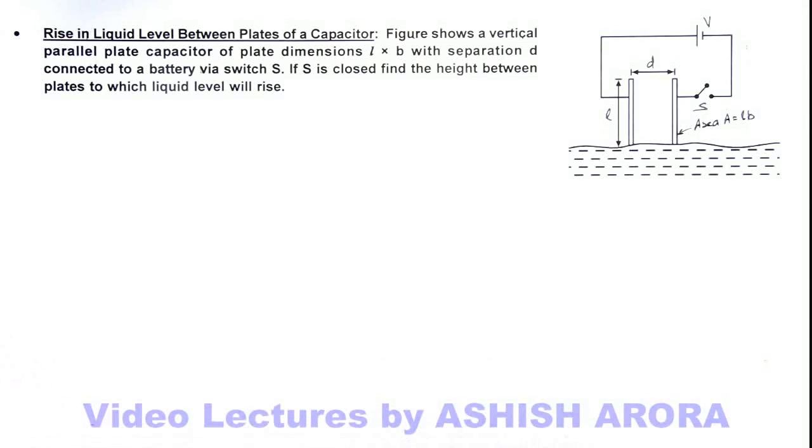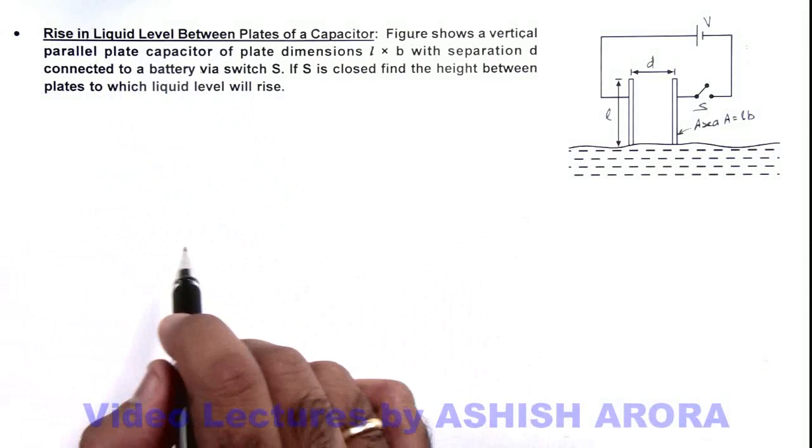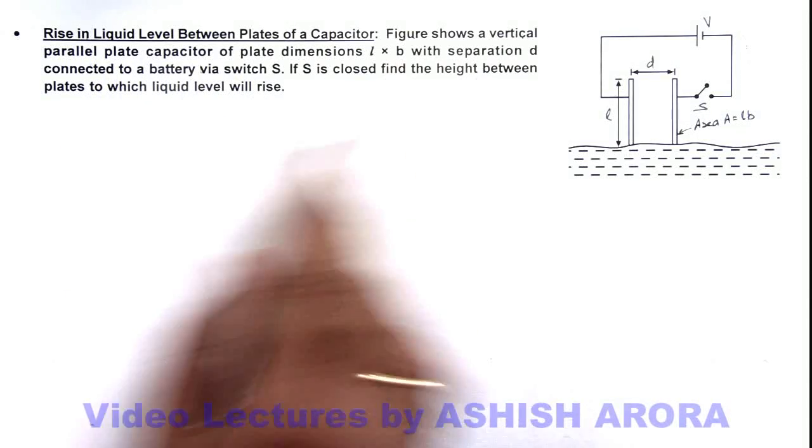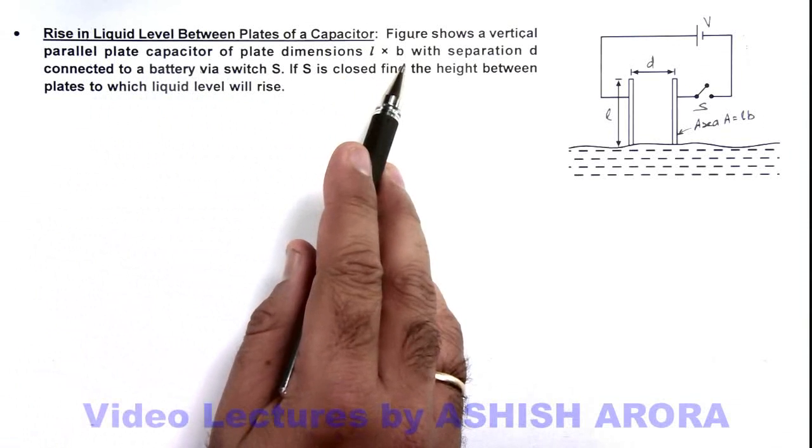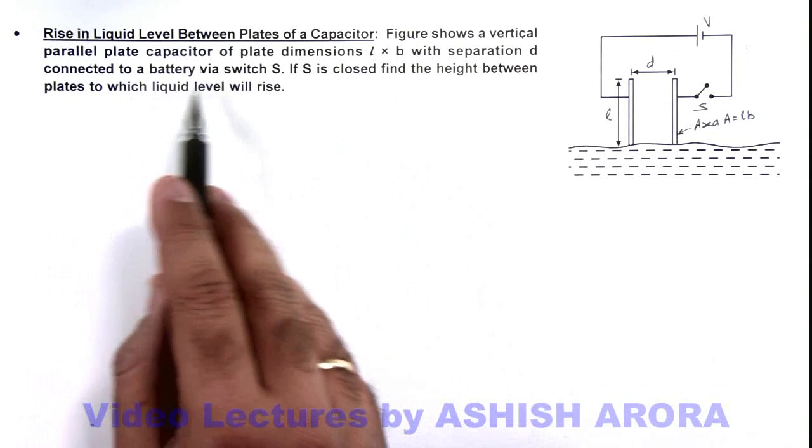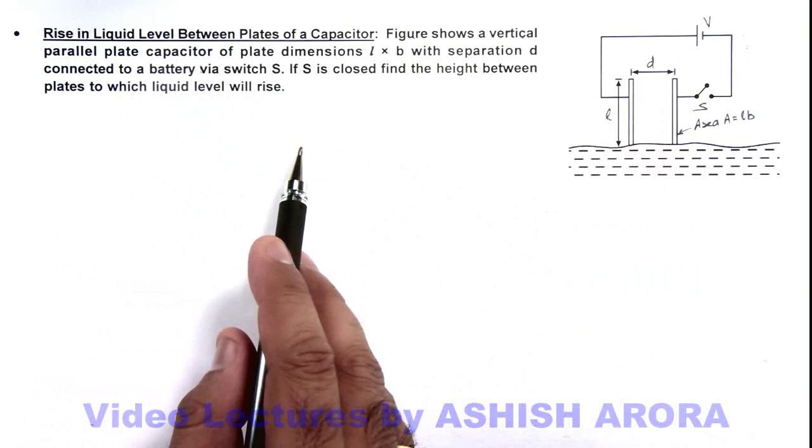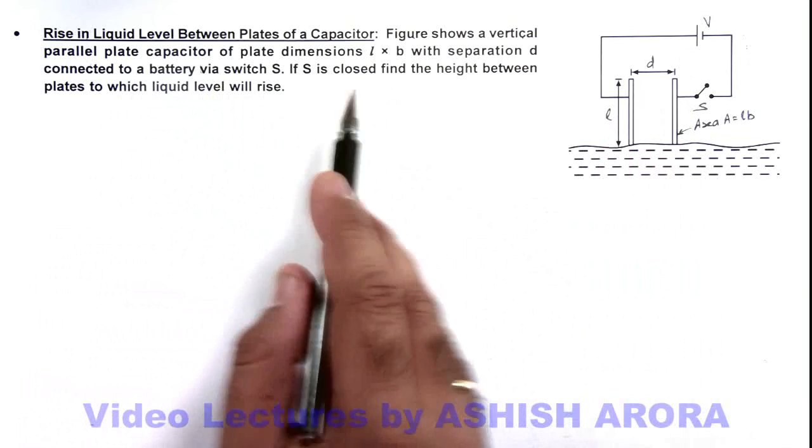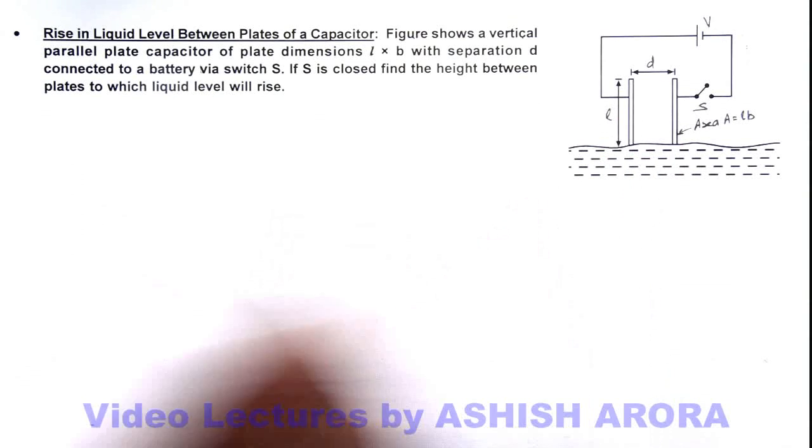In this illustration, we'll study the rise in liquid level between plates of a capacitor. The figure shows a vertical parallel plate capacitor of plate dimensions l by b with separation d, connected to a battery via switch S. The battery voltage is V. If S is closed, we are required to find the height between the plates to which the liquid will rise.